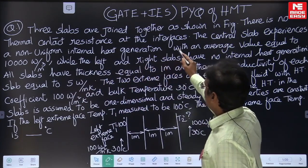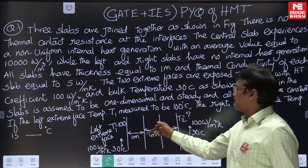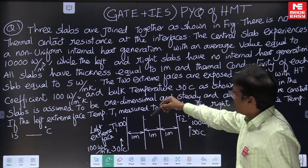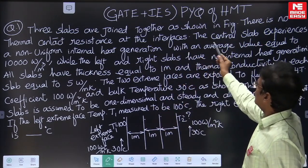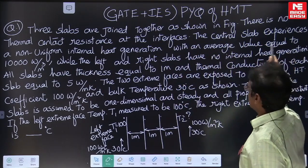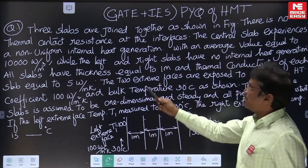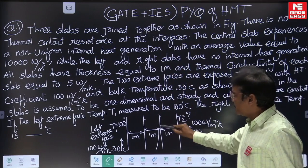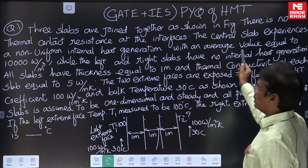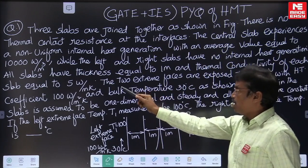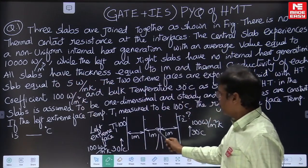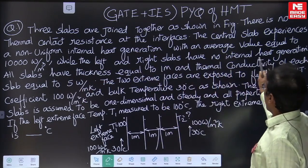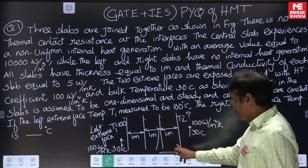Three slabs are joined together as shown in the figure. There is no thermal contact resistance at the interfaces. The central slab experiences a non-uniform internal heat generation with an average value equal to 10,000 Watt per meter cube. The left and right slabs have no internal heat generation — heat generation is happening only in the central slab.